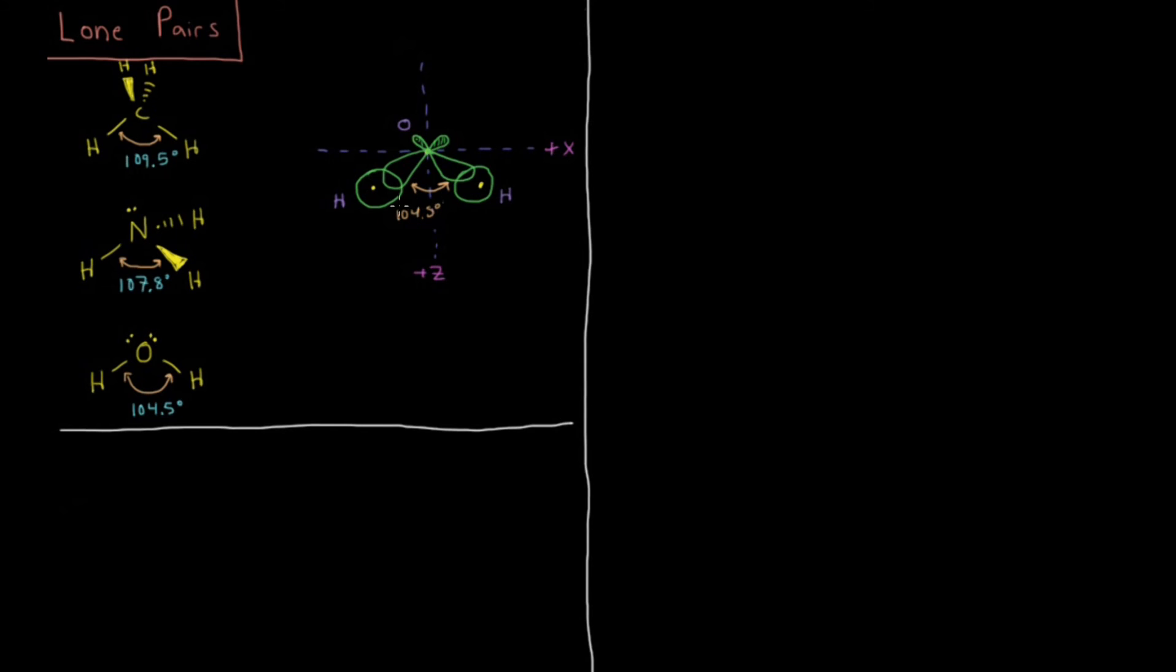Because these are 104.5, they would be pointing a little bit further out, we wouldn't get the ideal kind of overlap with an orbital that's pointing straight towards the atom that we want to bond with.